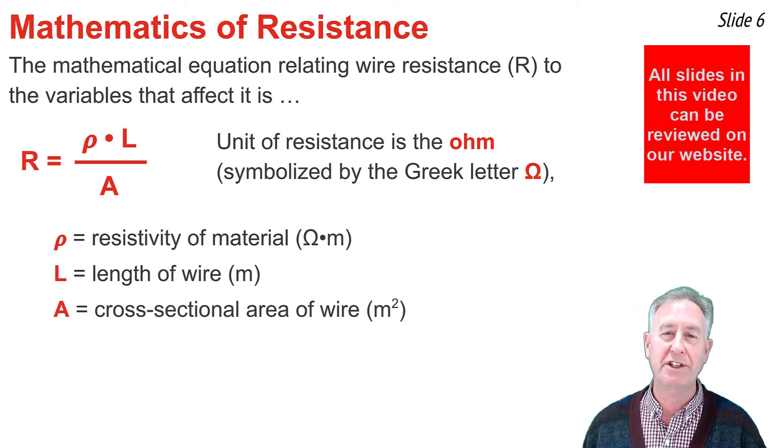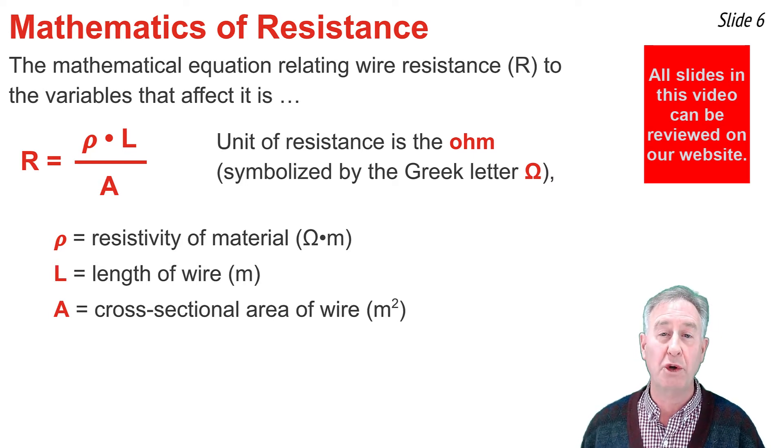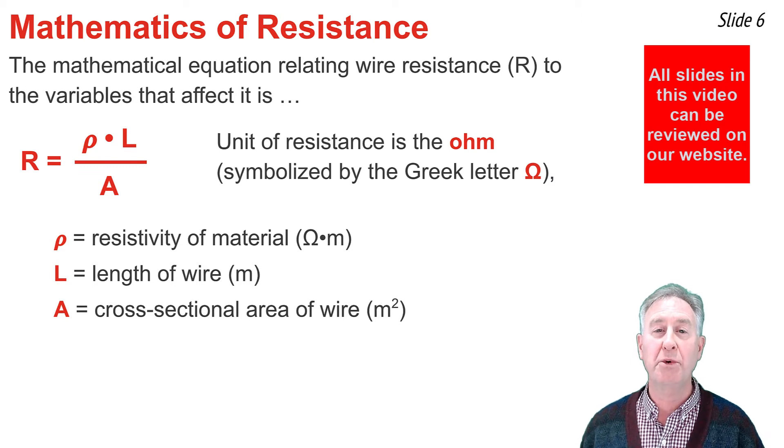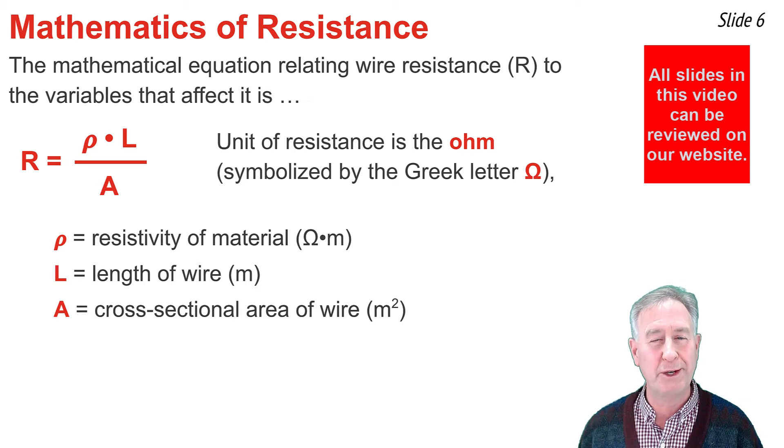When using this equation to calculate resistance, it's important to give great attention to units. The unit on resistivity is ohm times meter, so it's important to substitute in values for length in units of meters and value for areas in units of meters squared, so that the meter units cancel out and the only unit remaining is the omega, or ohm.